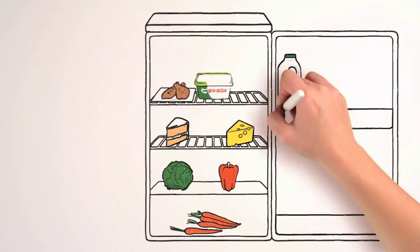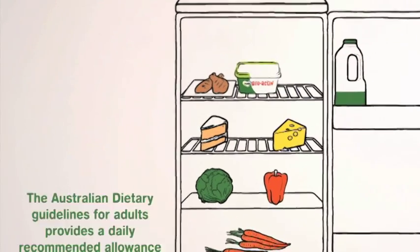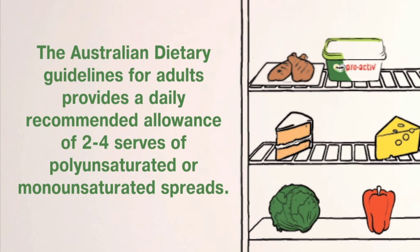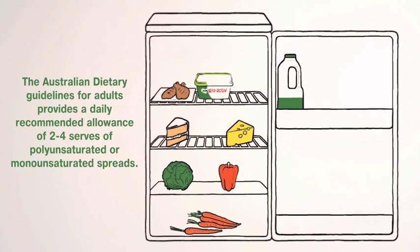The Australian Dietary Guidelines for Adults provides a daily recommended allowance of two to four serves of polyunsaturated or monounsaturated spreads, such as Flora.